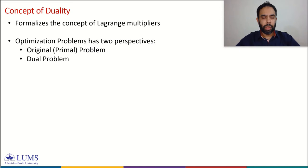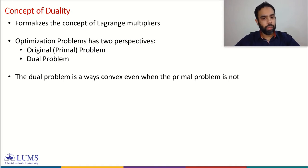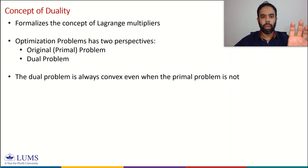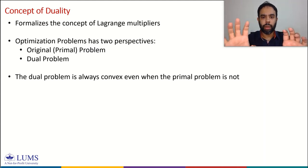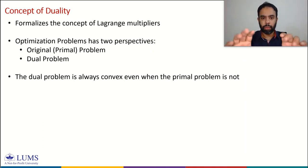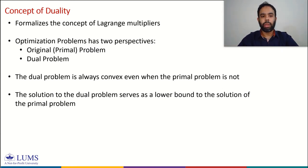The dual problem is always convex even when the primal problem is not convex or is hard to solve. The solution to the dual problem serves as a lower bound to the solution of the primal problem. So for each primal problem we can formulate a dual problem, and the dual problem is always convex—meaning we can solve it—and its solution serves as a lower bound to the primal.